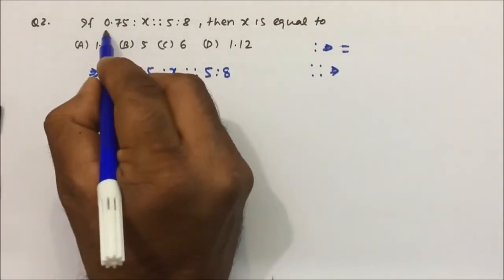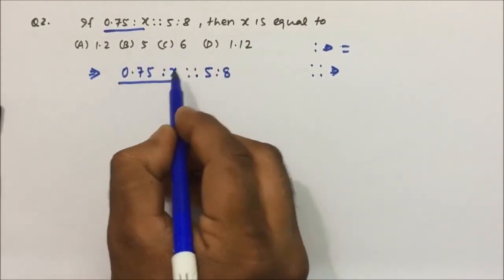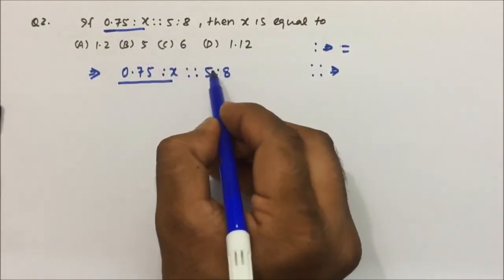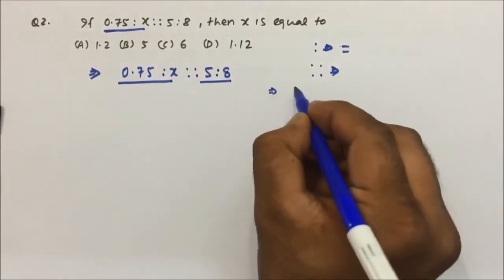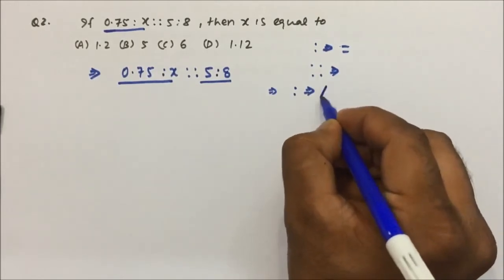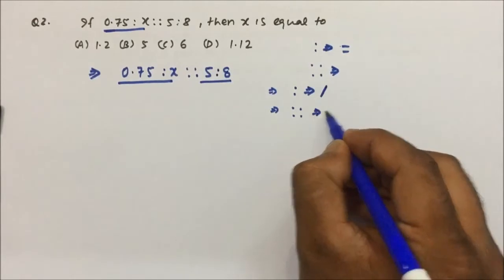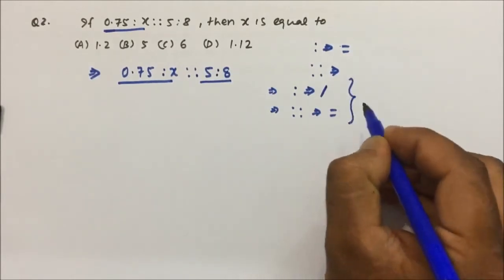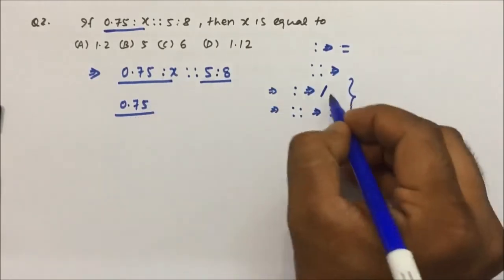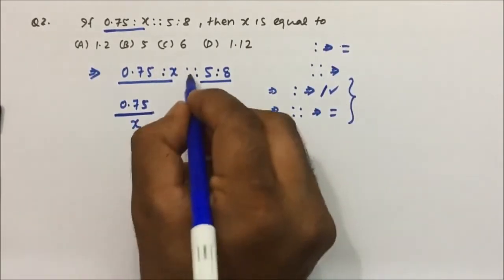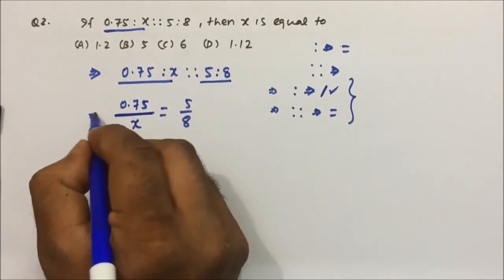Question number 2: 0.75 is to x, in proportion to 5 is to 8. Now this symbol will be treated as divided by, and this symbol will be treated as equal to. So 0.75 divided by x equals 5 by 8. Now 5 goes into 0.75 by 0.15 times.